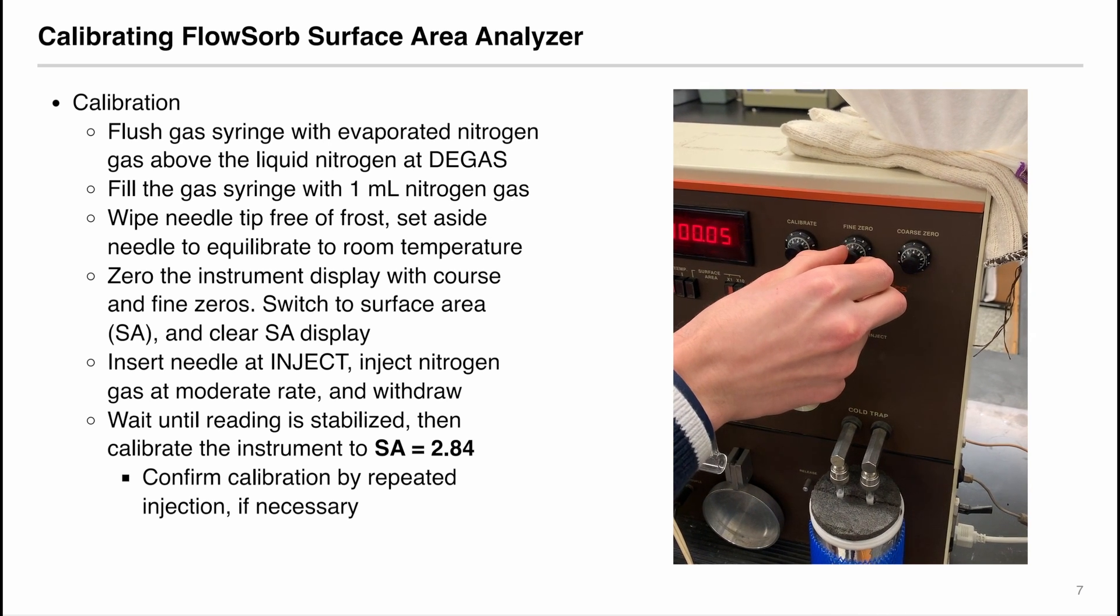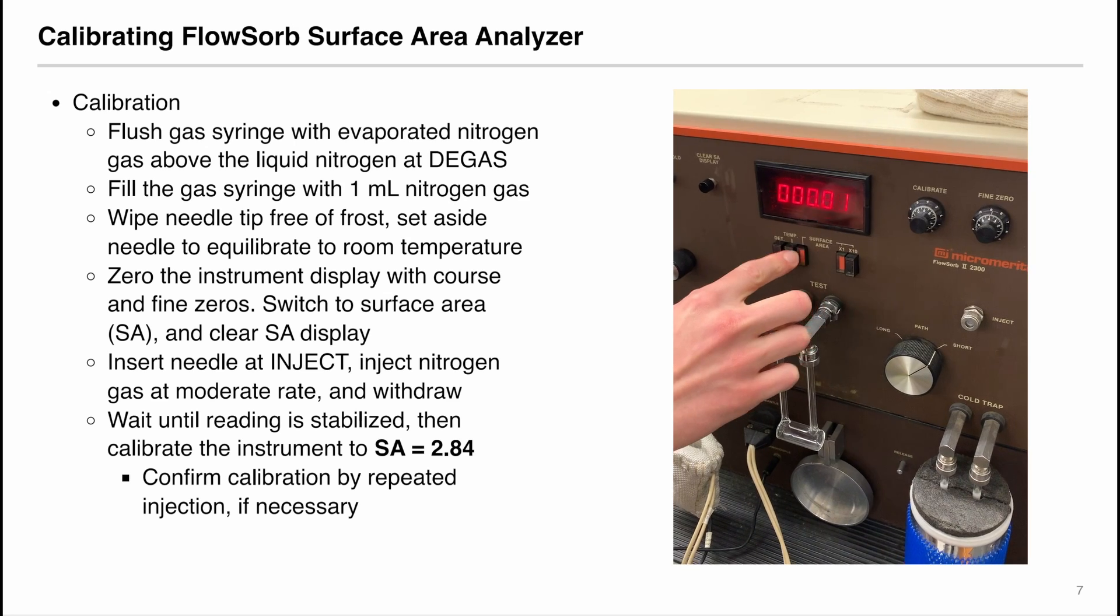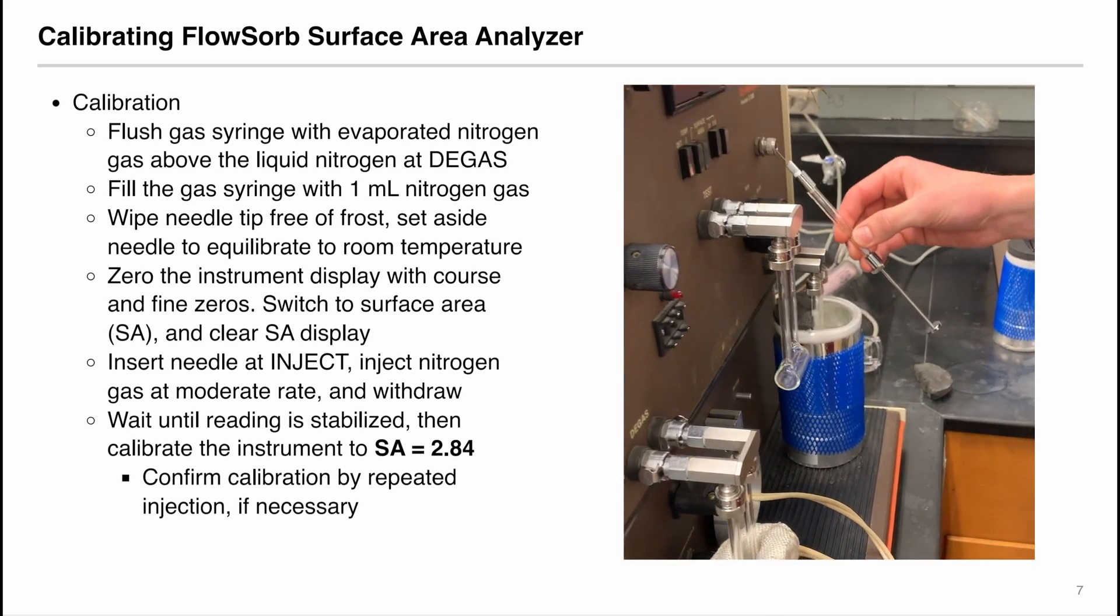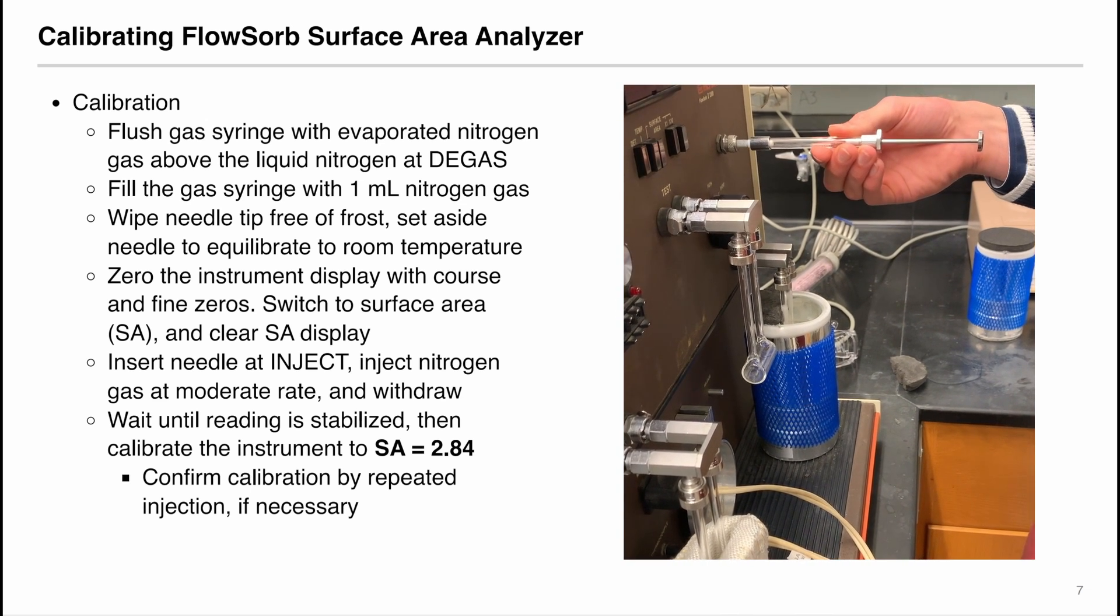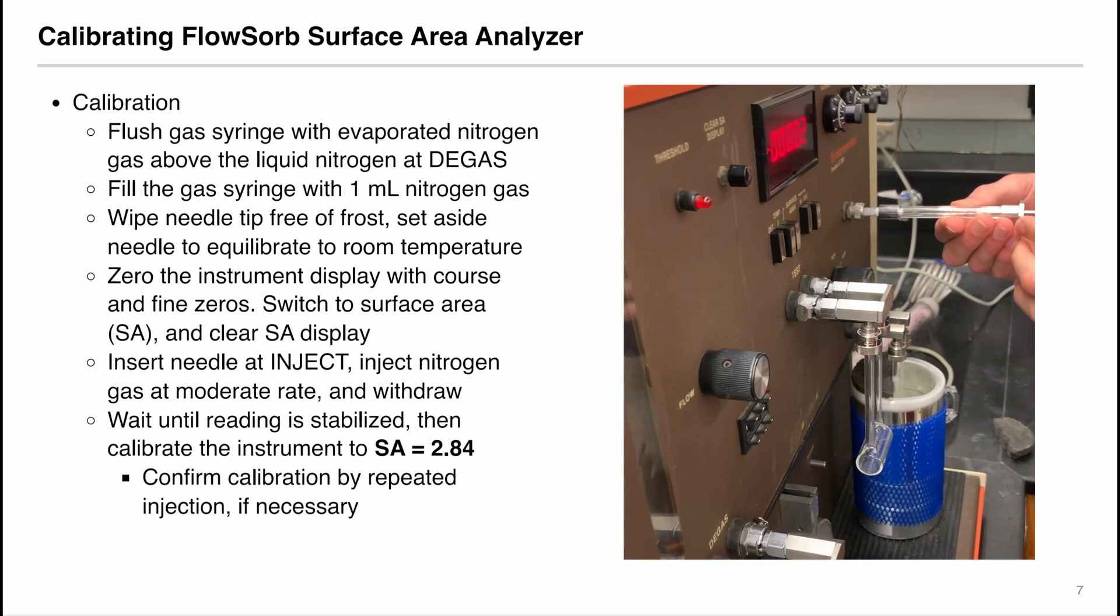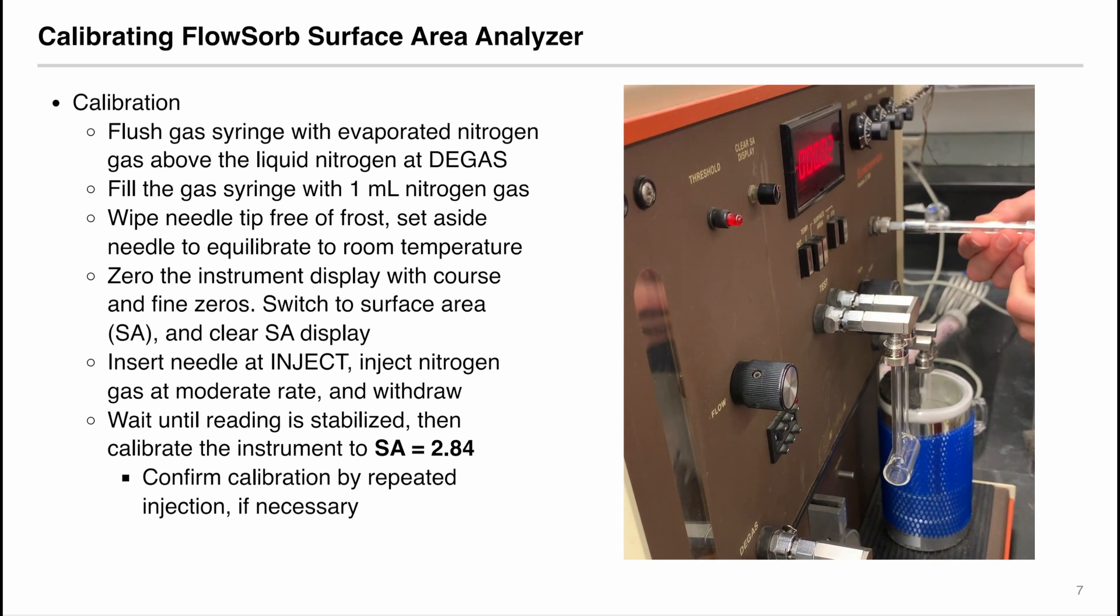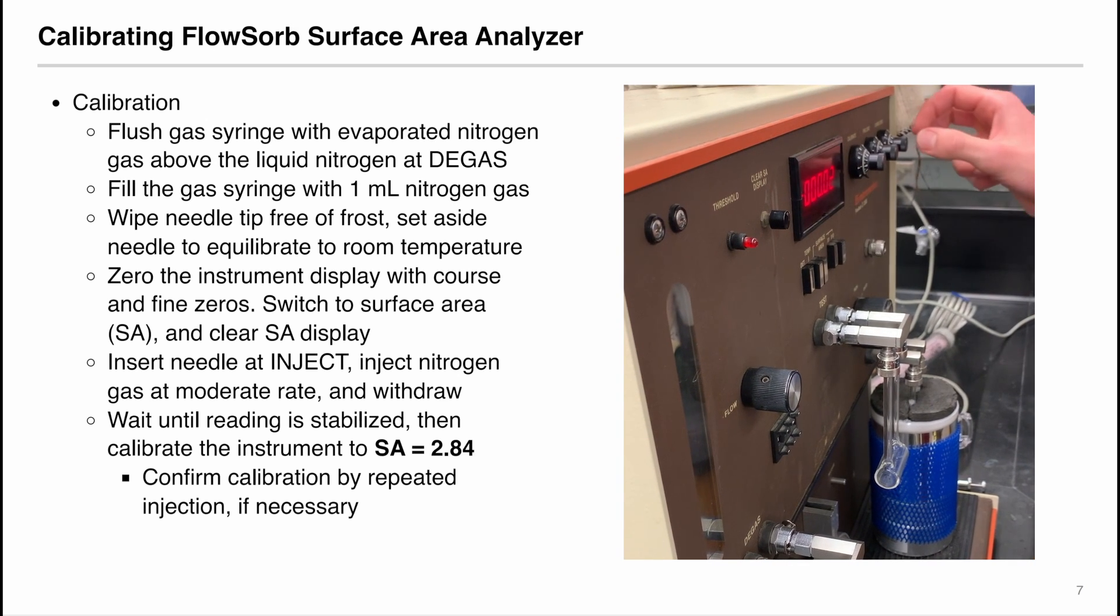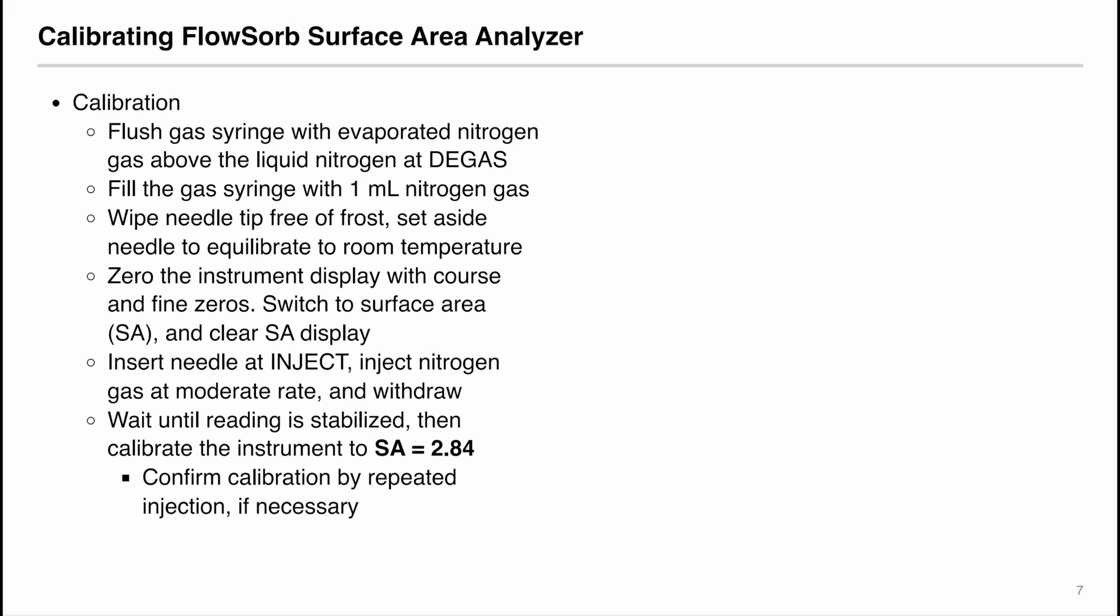Then zero the instrument display using the coarse and fine zeros. Then switch to the surface area or SA mode and clear SA display. Now insert the needle at the inject position and inject the nitrogen gas at a moderate rate. And withdraw the gas syringe. Wait until the reading is stabilized. Then calibrate the instrument so that the SA is equal to 2.84 by adjusting the coarse and fine zeros. You can confirm the calibration by repeated injection of gas nitrogen if you deem necessary.